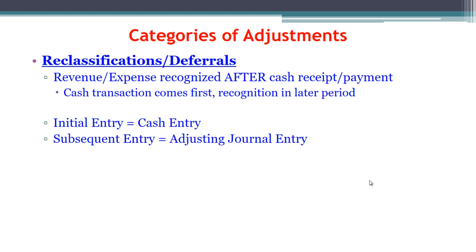For reclassifications and deferrals, the revenue or expense is going to be recognized after we have already received the cash — it's going to be in another period. The cash transaction comes first; we record that, and then later on we recognize the revenue or expense. So the initial entry, which could happen at any point, is the cash entry — this is not the adjusting entry. The subsequent entry in this case is the adjusting entry, when we finally realize we've earned some of that cash or incurred some of that expense.